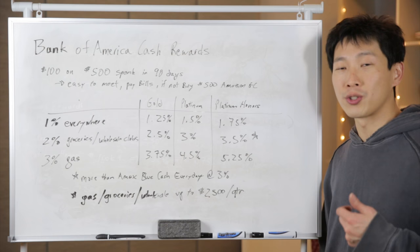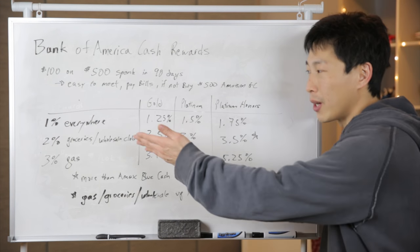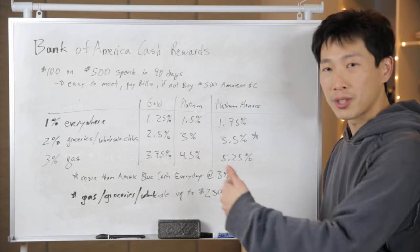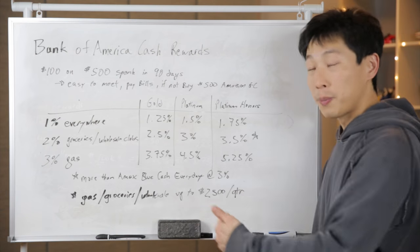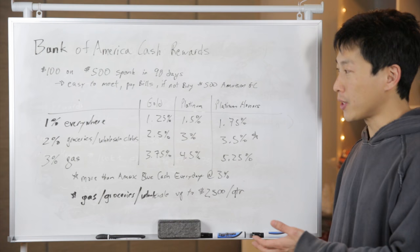Aside from the sign up bonus, there's also categories of cash back, which is year round. They don't rotate around. You get 1% everywhere. You get 2% groceries and wholesale clubs such as Costco. And you get 3% on gas. On the surface, it sounds okay, but when you combine it with the preferred rewards thing...